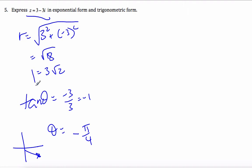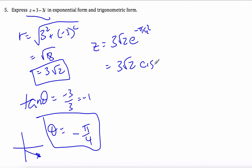So I have r, I have θ, I can make 3√2 e^(-π/4 i). That's what z is equal to. It is also equal to 3√2 cis(-π/4).